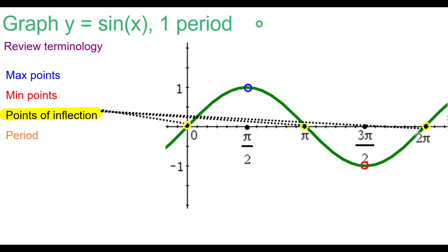And there are three points of inflection where the curve changes concavity from concave up to concave down, concave down to concave up. And the period is 2π. It takes 2π to go through one wave. Pause as needed.